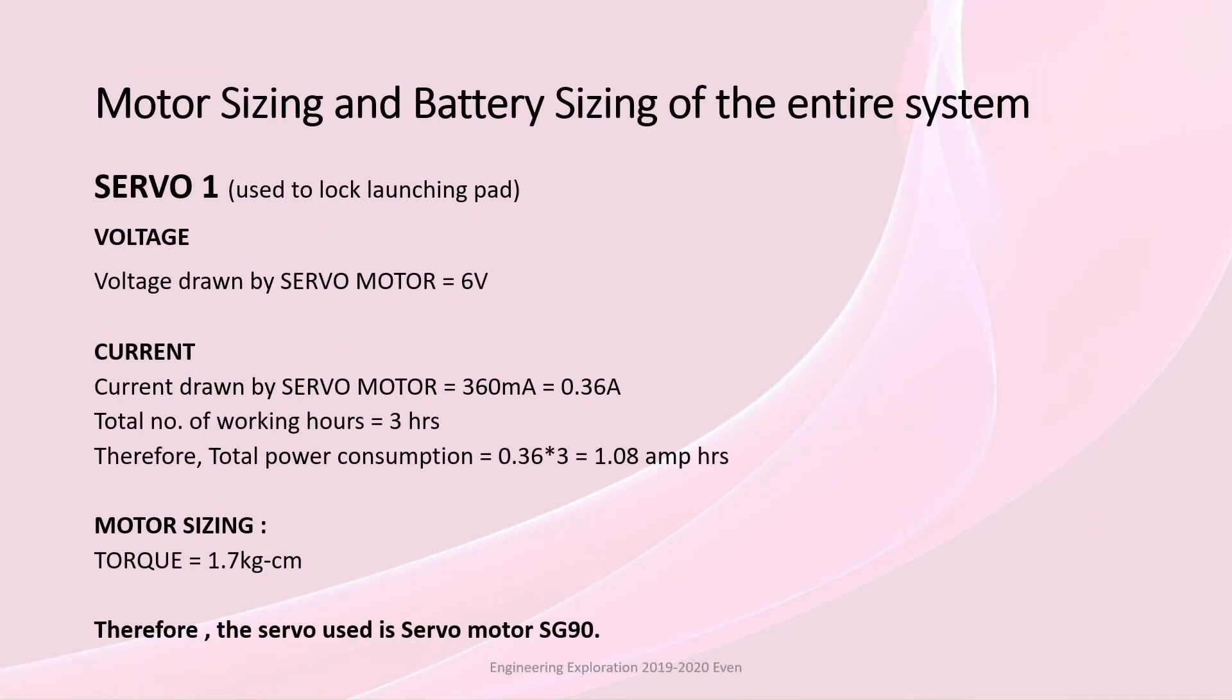Motor sizing and battery sizing. First motor sizing is done for servo 1 which is used in launching pad. Voltage drawn by it is 6V, Current 0.36A. It works totally for 3 hours. Power consumed is 1.08A. Total torque required is 1.7kgcm. Therefore servo used is SG90.